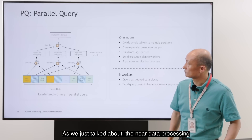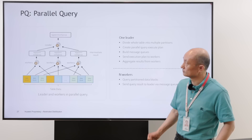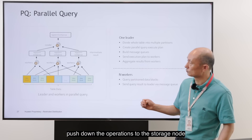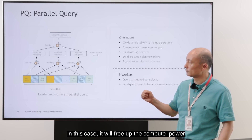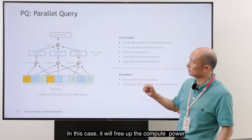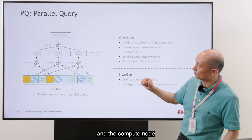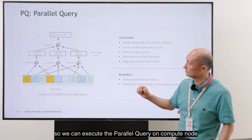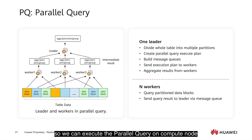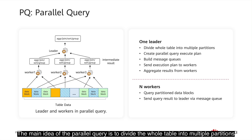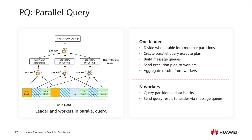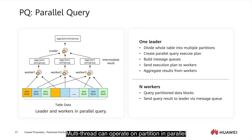As we just talked about, near data processing pushes down the operations to the storage node. In this case, it will free up the compute power at the compute node, so we can execute parallel queries on the compute node. The main idea of parallel query is to divide the whole table into multiple partitions, and multi-threads can operate on each partition in parallel.